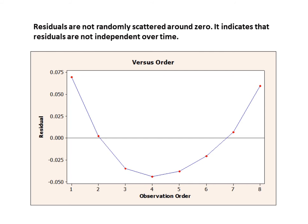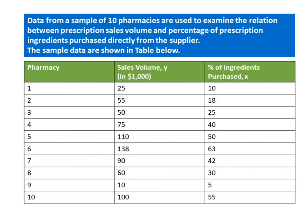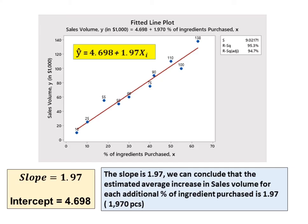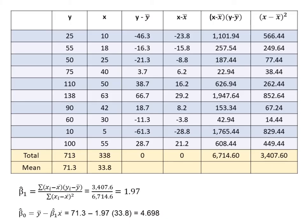Let's take a look at an example. Data from a sample of 10 pharmacies are used to examine the relation between prescription sales volume and percentage of prescription ingredients purchased directly from the supplier. The sample data are shown in the table below. From the scatter plot, it shows a positive linear relationship between percentage of prescription ingredients purchased and prescription sales volume.